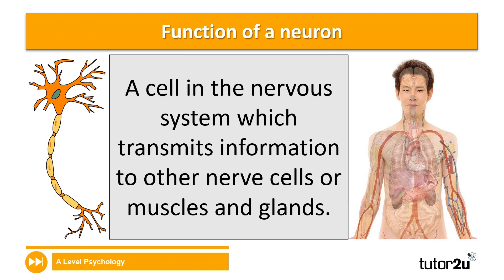Speaking generally, the overarching function of a neuron is basically to transmit information around the body. The way that neurons do this is they transmit information to other nerve cells, muscles, and glands. The function of a neuron is largely determined by the type of neuron that it is, and we'll be discussing this in later sessions.